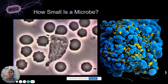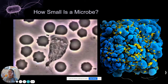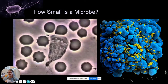How small is a microbe? A standard bacteria cell is about one micron or micrometer. You know how long a meter is — a centimeter is about the width of your pinky, a millimeter is a tenth of that or about the width of a paperclip, and a micron is one thousandth the width of a paperclip.